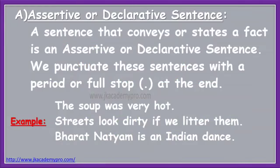The first type is the assertive sentence, also called a declarative sentence. A sentence that conveys or states a fact is an assertive or declarative sentence. We punctuate these sentences with a period or full stop at the end. Examples: 'The soup was very hot.' 'Streets look dirty if we litter them.' 'Bharatnatyam is an Indian dance.' All these sentences give information or state a fact and end with a full stop.